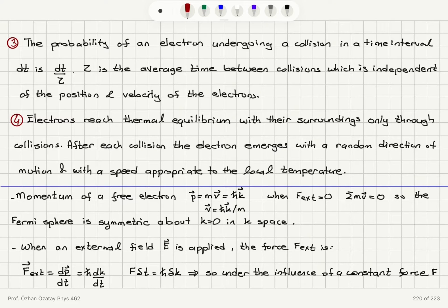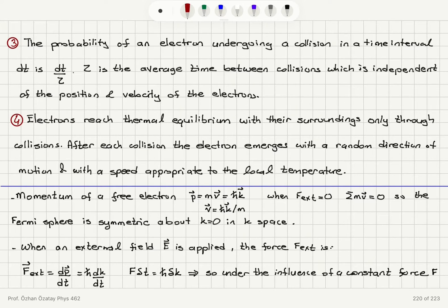The momentum of an electron mv in the quantum treatment is h-bar k, and the velocity is h-bar k over m. When there is no external force, the total momentum is zero, so the Fermi sphere is symmetric about k equals zero in k-space. When an external field is applied, the force is dp/dt, which equals h-bar dk/dt in the wave picture. Applying the force for a time interval delta-t causes a change in momentum of h-bar times delta-k.